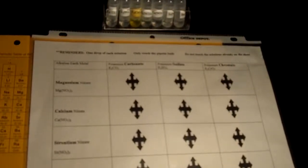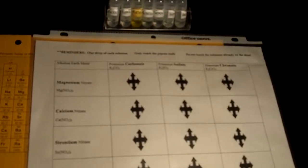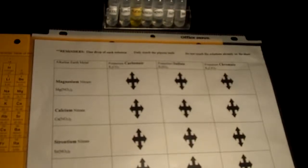Go. This is the makeup lab for unit 3's first lab, properties of alkaline earth metals. The purpose: